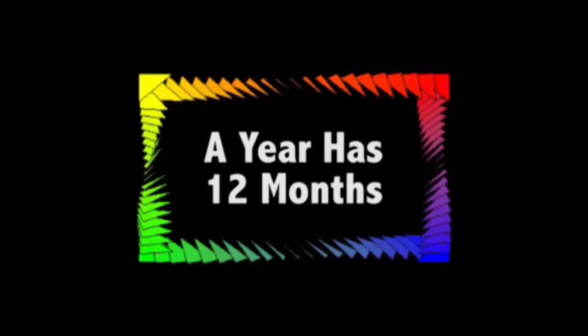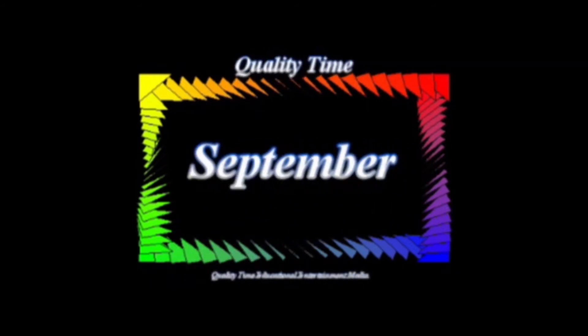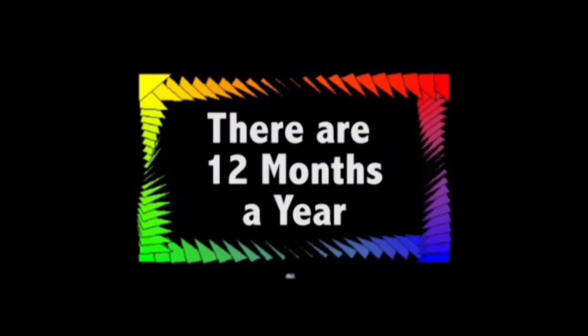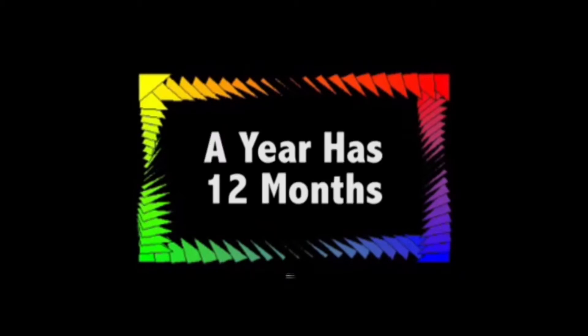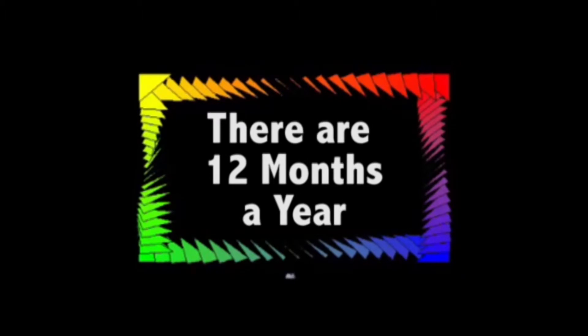A year has 12 months. January, February, March, April, May, June, July, August, September, October, November, December. There's 12 months in a year. A year has 12 months. There's 12 months in a year.